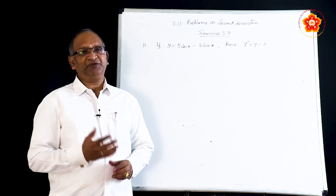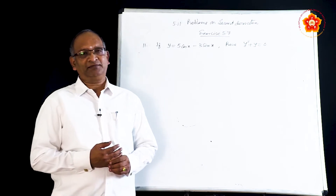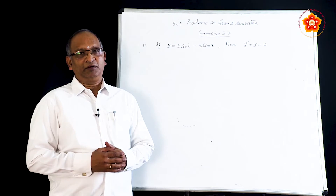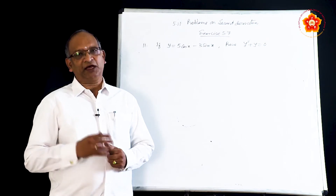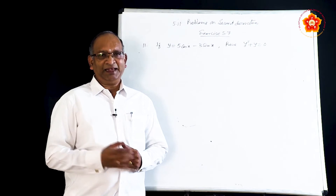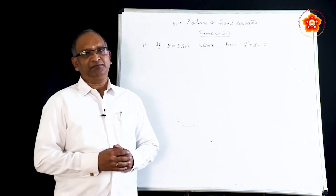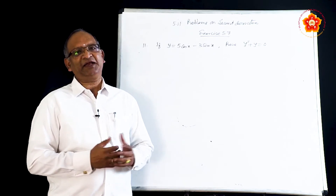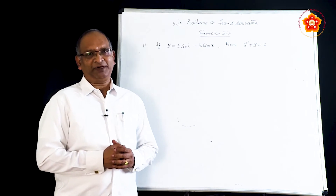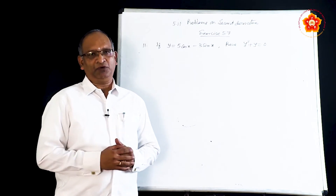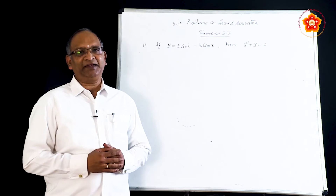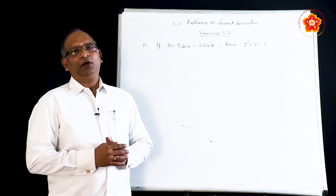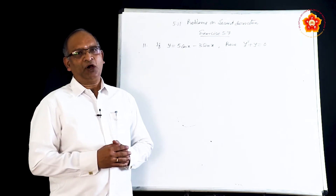One small thing to keep in mind: when a function is given we find the first derivative, and the first derivative is also going to be a function. Unless that particular function is derivable, we cannot find the second derivative, but such cases are very rare. So we do not need to worry about it, but we need to know when we are not able to find the second derivative, this will be the reason. Now we are going to tackle slightly more difficult problems on second derivatives.